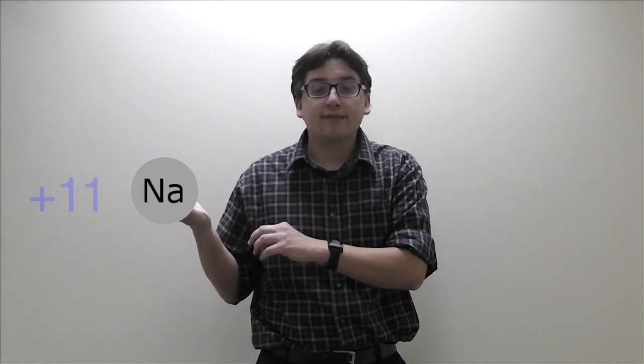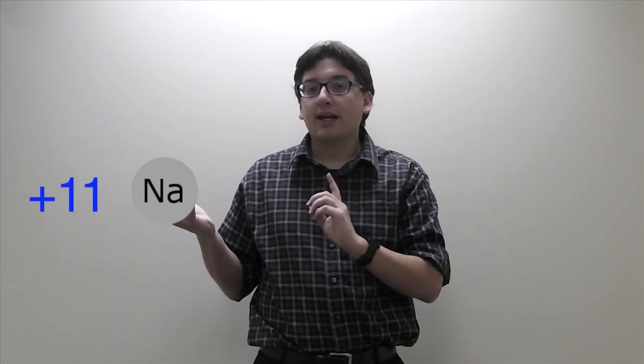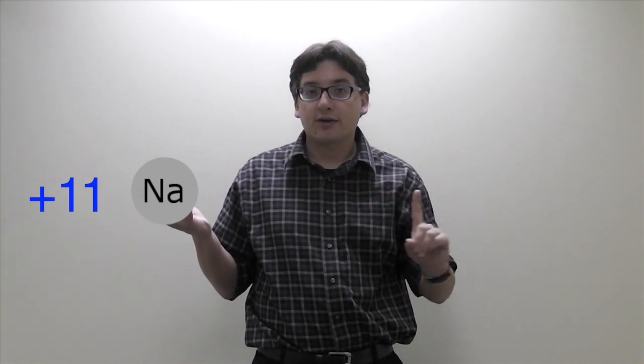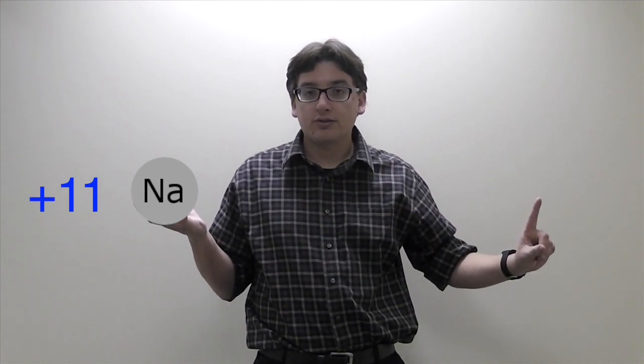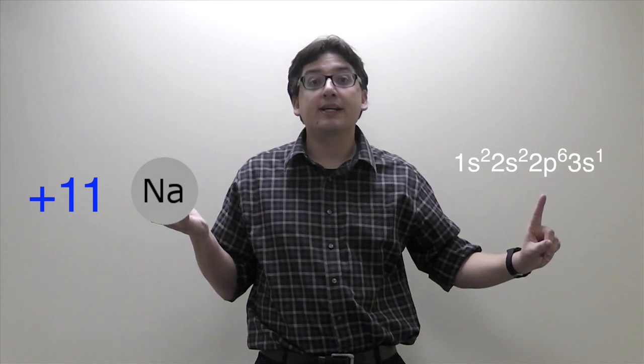So sodium's atomic number is 11, which means it has 11 protons, which means its nucleus has a +11 charge. Let's figure out sodium's electron configuration really quick: 1s² 2s² 2p⁶ 3s¹.